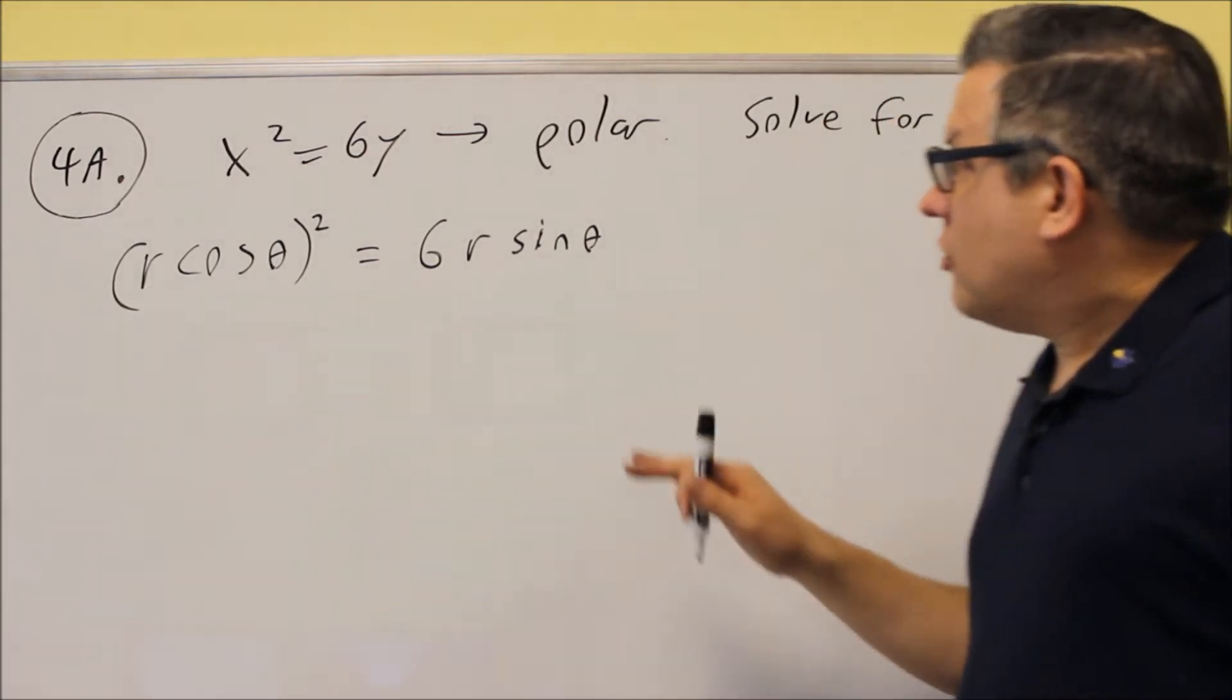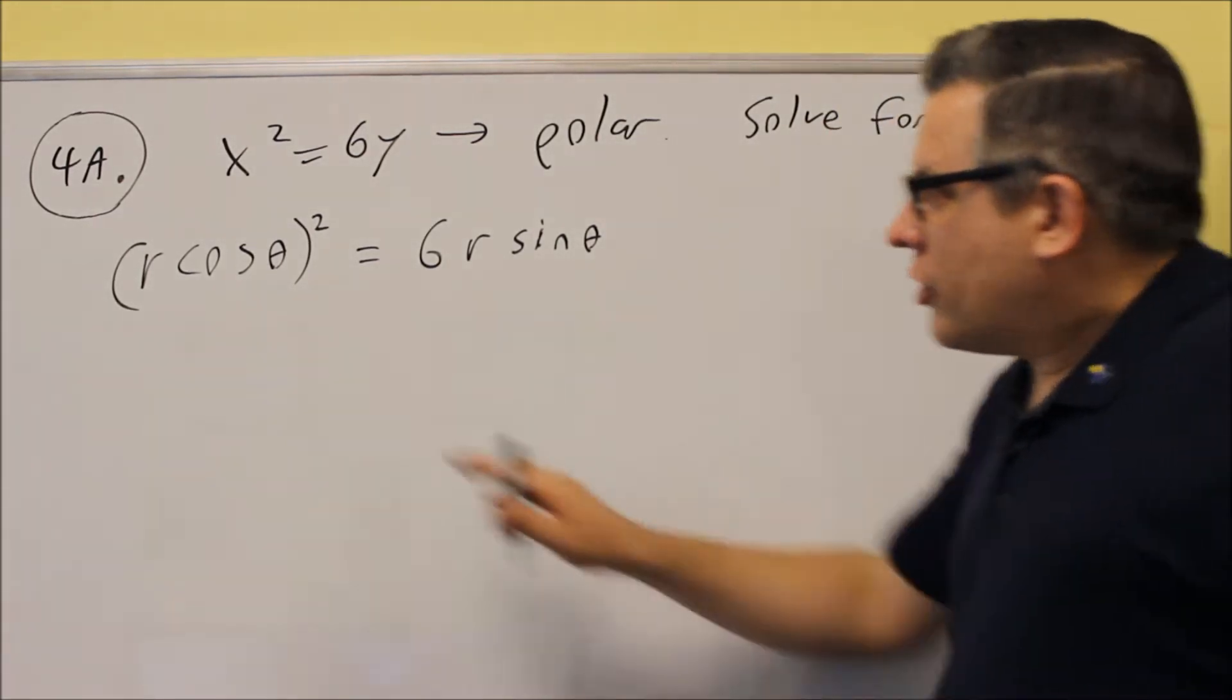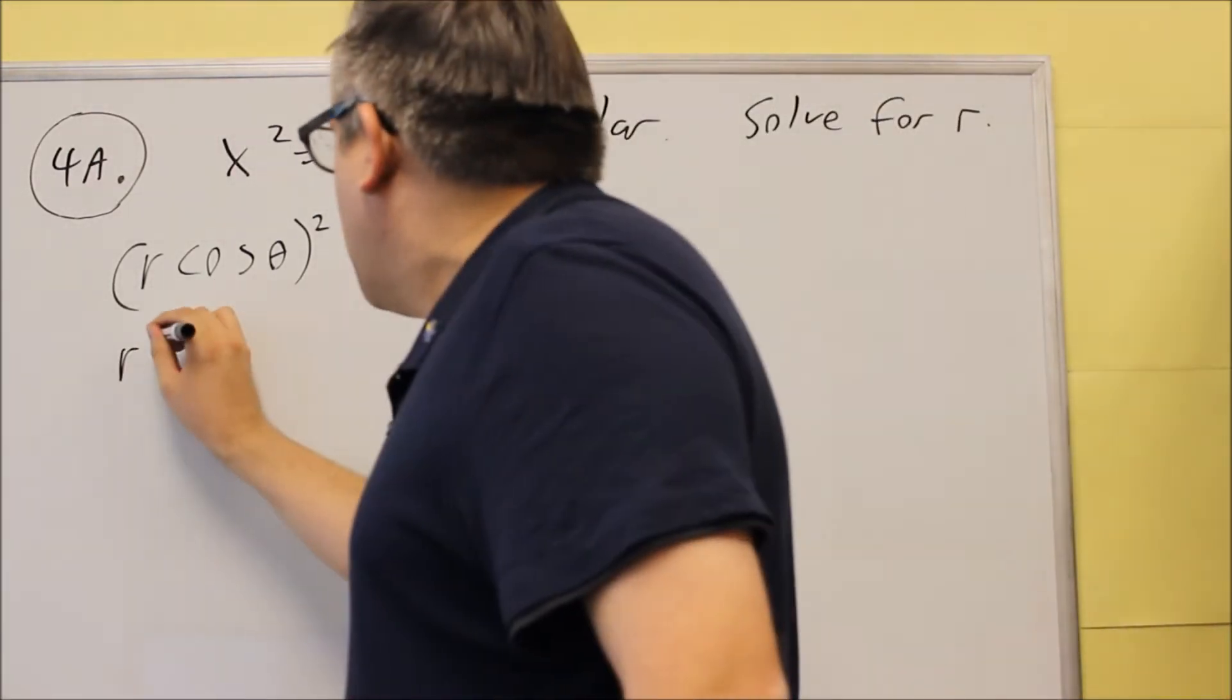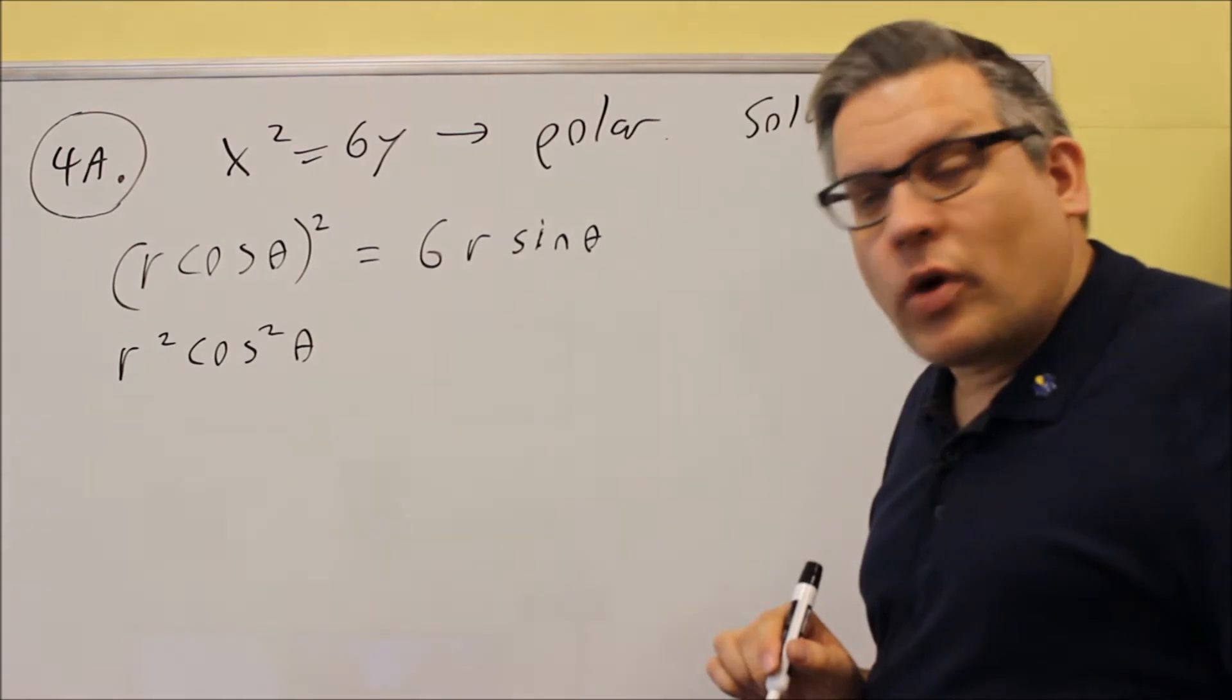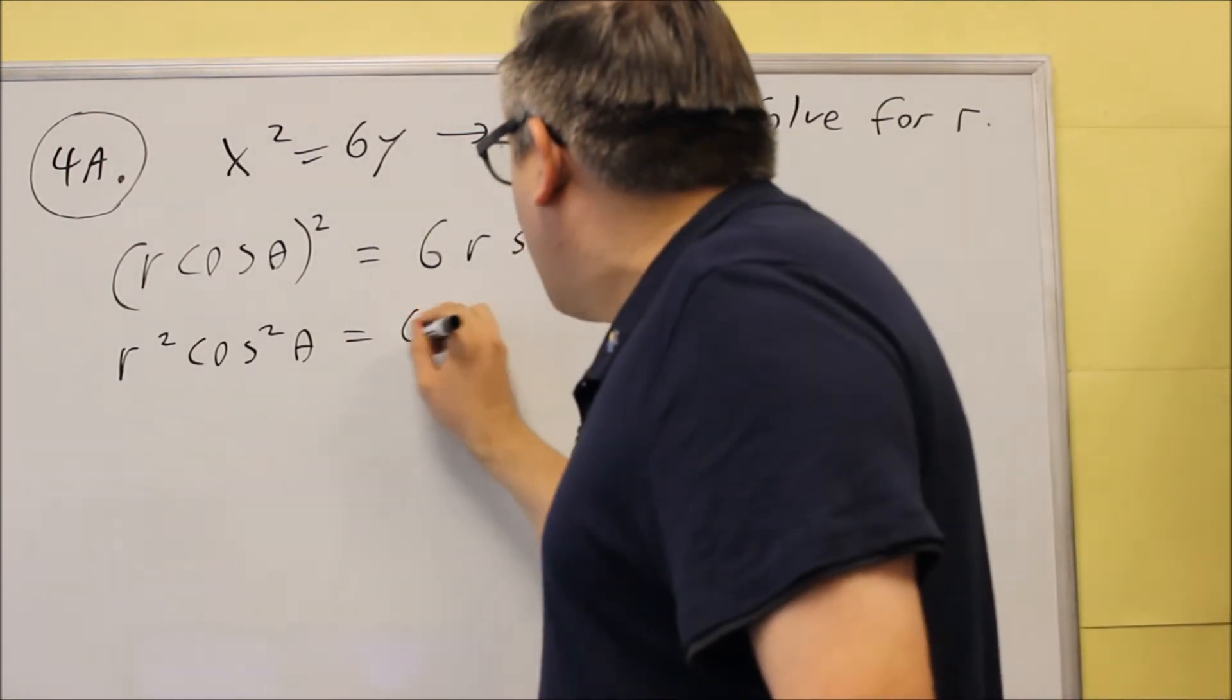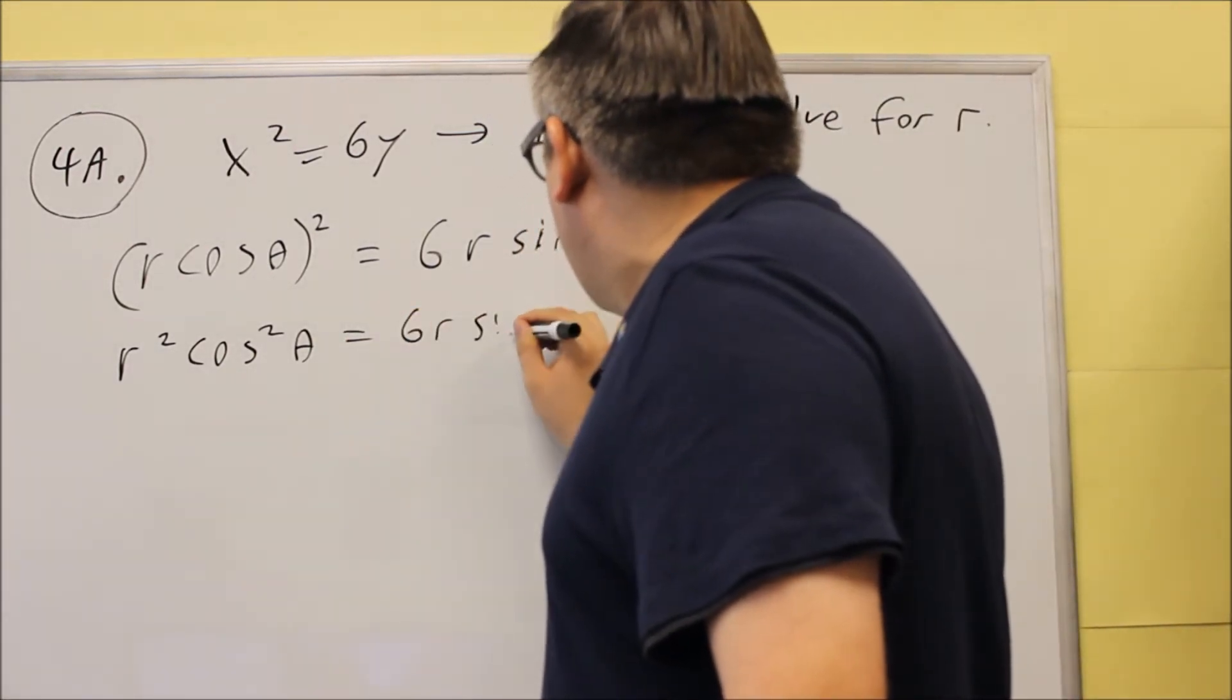Now, the next thing we have to do is we need to solve for R. So we're going to square this one, so we get R squared cosine squared theta. Remember, both things inside need to be squared, and then we have the rest of it is the same.